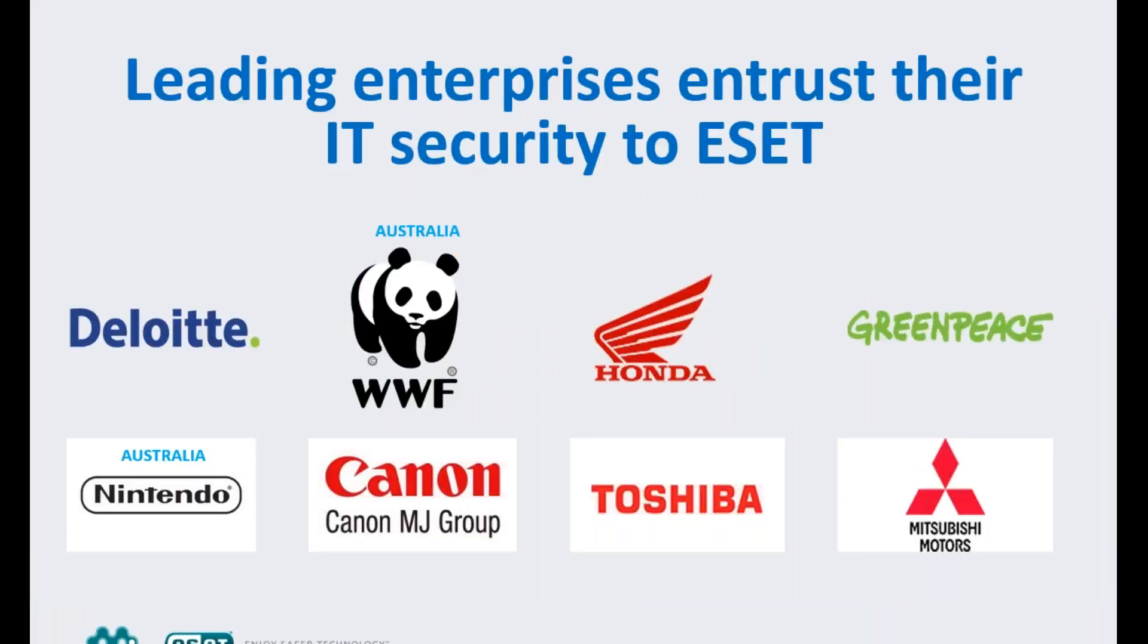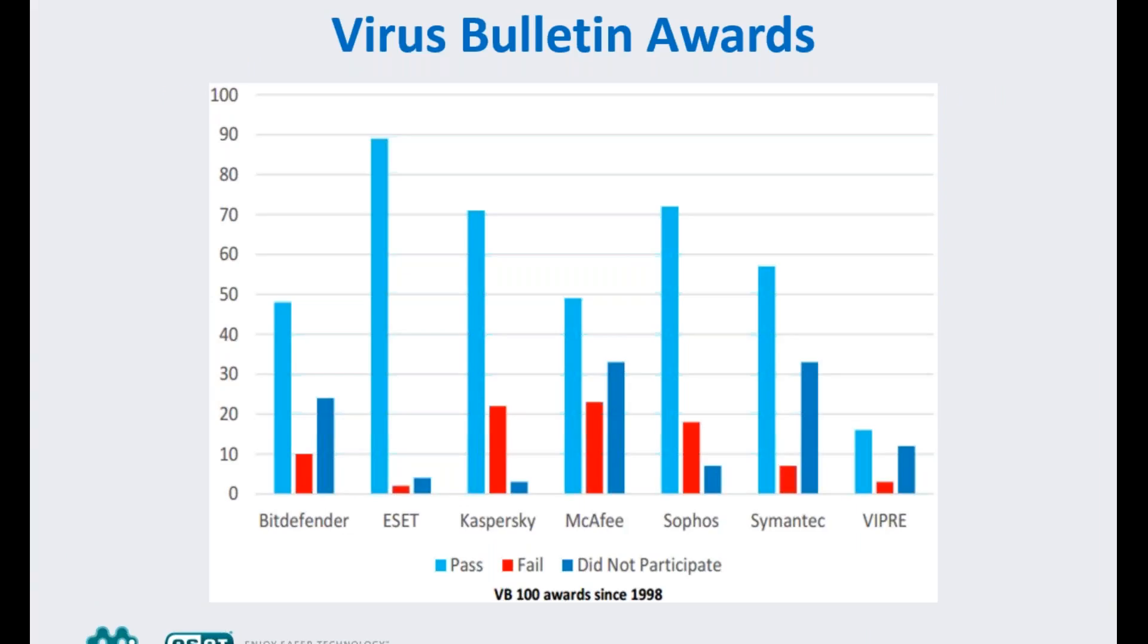These are some of the more well-known companies that ESET is protecting already here in Australia. Internationally, ESET is one of the world's leading antivirus vendors and has won more of the highly respected Virus Bulletin 100 awards than any other AV vendor. This graph illustrates their success against the world's leading brands since 1998.